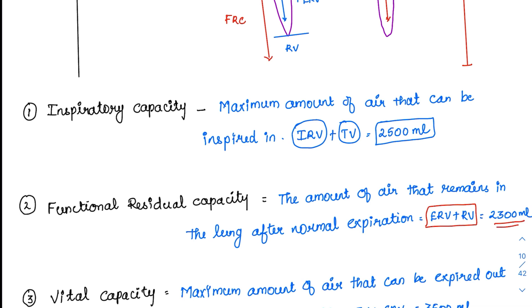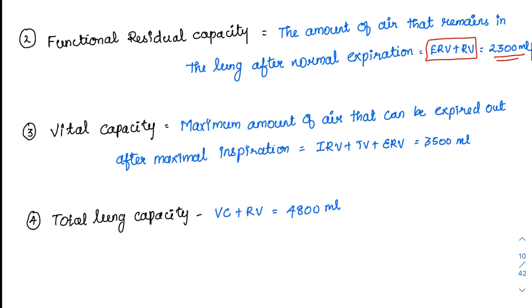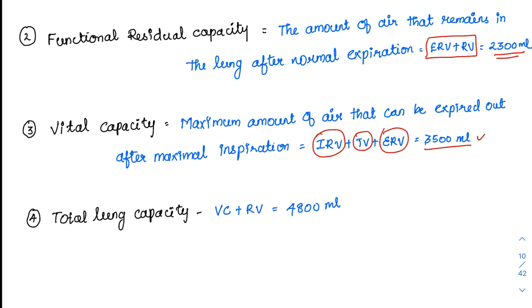The third capacity is called vital capacity. Vital means very essential — the maximum amount of air that can be exchanged with the external environment during an emergency is called the vital capacity. It is the addition of inspiratory reserve volume, tidal volume, and expiratory reserve volume, and its total value is 3500 ml. Total lung capacity is obtained when we add up all the volumes — or vital capacity plus residual volume — giving a total value of 4800 ml.